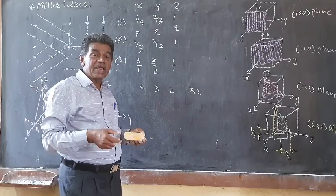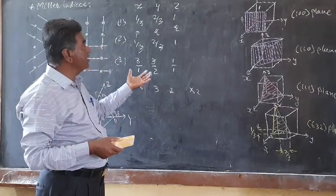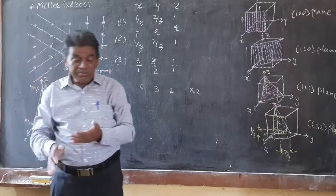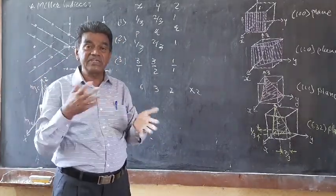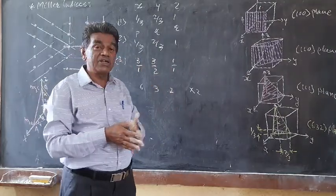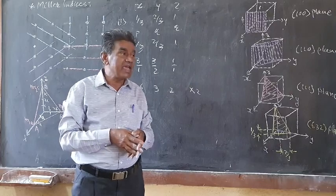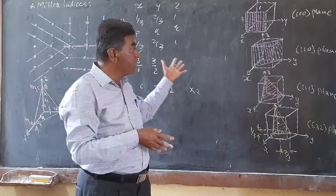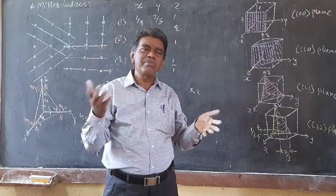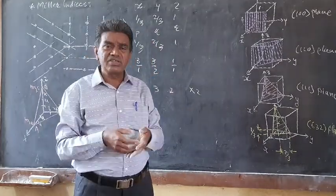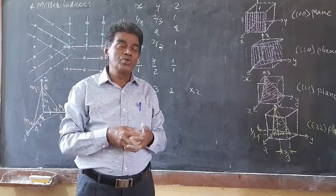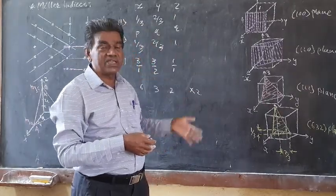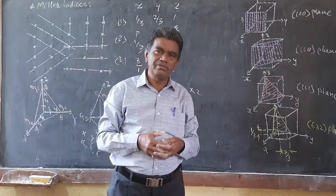In this way, Miller indices of any plane can be calculated using this procedure. Miller indices are important for indexing crystal planes, and in determining the crystal structure of any material. By applying this analysis we can index all the reflecting crystal planes, which will be seen in detail in the next chapter on X-ray diffraction. In the next lecture we will see more examples on Miller indices. Thank you.